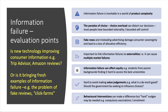It's also important to link information failure to externalities, particularly if studying merit and demerit goods, as these two types of market failure are strongly linked. Information failure can also relate to equity and inequality — for example, students from poor backgrounds or schools without a track record in sending students to top universities may find it harder to access information and specialist advice. With information failure it's also hard to avoid value judgments: what is a merit good? Should government use behavioural nudges to influence our choices? Is paternalism good for us in the long term?